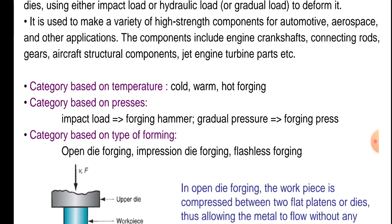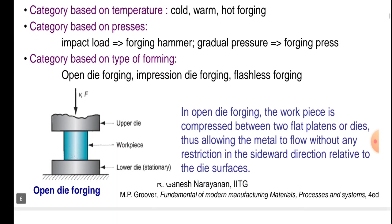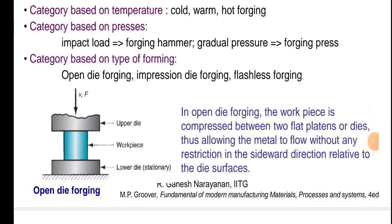Categories of forging based on temperature: cold, warm, and hot forging. Based on pressure: impact load — forging hammer; gradual pressure — forging press. Based on type of forging: open die forging, impression die forging, and flashless forging.